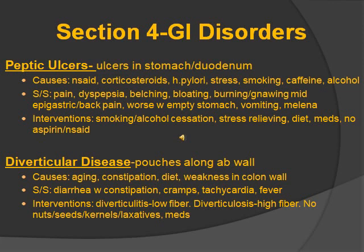Diverticular disease — outpouchings along the abdominal wall. Causes: aging, constipation, diet, weakness in the colon wall. Signs and symptoms: diarrhea with constipation, cramps, tachycardia, and fever. Diverticulitis is inflammation; diverticulosis is just the regular pouching without inflammation. When you have inflammation, you want a low-fiber diet because high-fiber keeps things moving and will worsen pain. When the inflammation resolves and you have just diverticulosis, switch to a high-fiber diet because the disease was caused by constipation. Do not give nuts, seeds, or kernels — anything that could get stuck in the pouches.